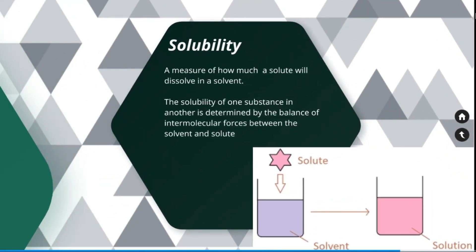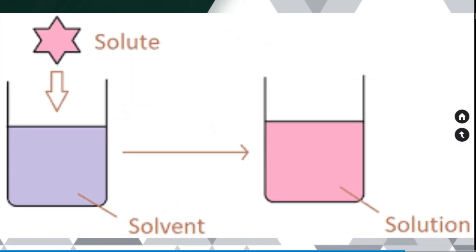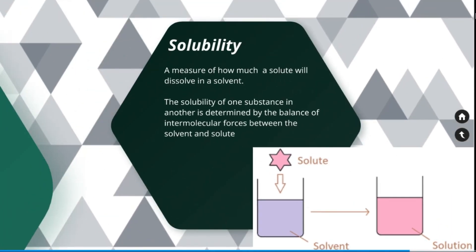Next solubility. The measure of how much a solute will dissolve in a solvent is called solubility of the material. The solubility of one substance in another is determined by the balance of intermolecular forces between the solvent and the solute. The image shows the solute put it in a solvent and had become a solution. The factors such as temperature and pressure will affect the solubility of the material.